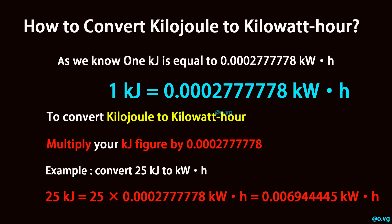Example: convert 25 kilojoule to kilowatt hour. 25 kilojoule is equal to 25 times 0.0002777778 kilowatt hour, which equals 0.006944445 kilowatt hour.